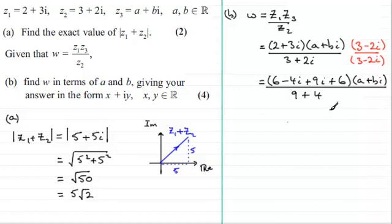All right so what we've got now is if we just tidy this top bracket up, 6 plus 6 is 12 and you've got minus 4i plus 9i which is going to be plus 5i and this is multiplied with a plus bi and it's all divided by 13.